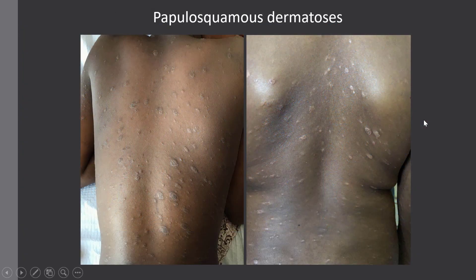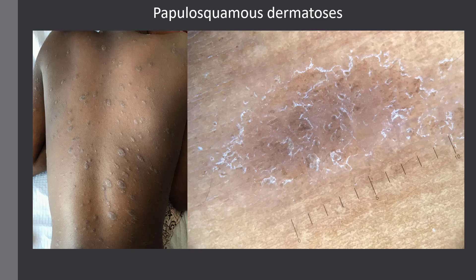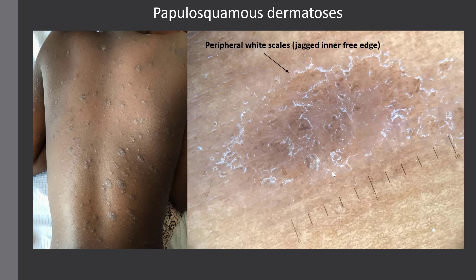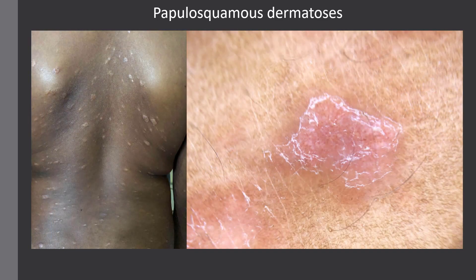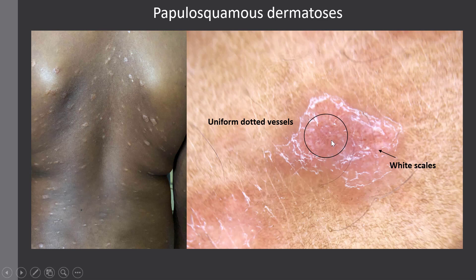Coming back to our two cases: in the first case, we have peripheral white scales with a jagged inner free edge — we also have brown dots, but this is not specific for any papulosquamous condition — so the diagnosis was pityriasis rosea. In the second case, the dermoscopy is very clear-cut: we have white scales and most importantly uniform dotted vessels, so the diagnosis was psoriasis.